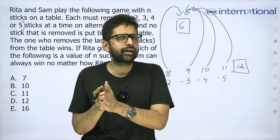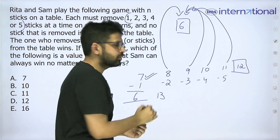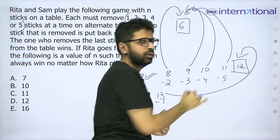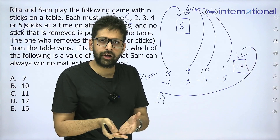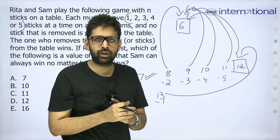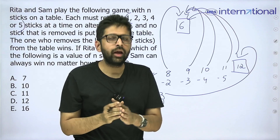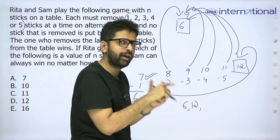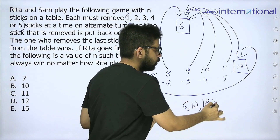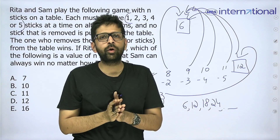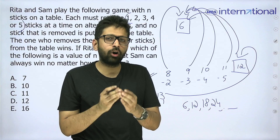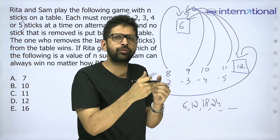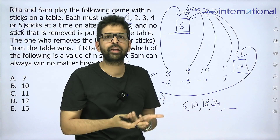Now I hope you can see the pattern being formed. If there are thirteen sticks and it is your turn, you can win — pick one, putting me at twelve. Whatever I do, you put me at six, and you win. So as a player, six sticks and twelve sticks are not favorable for you. The pattern continues: 18, 24, and so on. Any multiple of six is never favorable for the player whose turn it is, because the opponent will keep reducing to the next lower multiple of six until only six sticks remain.